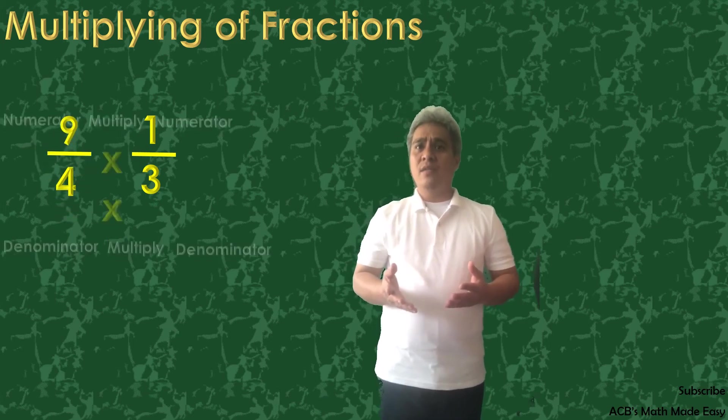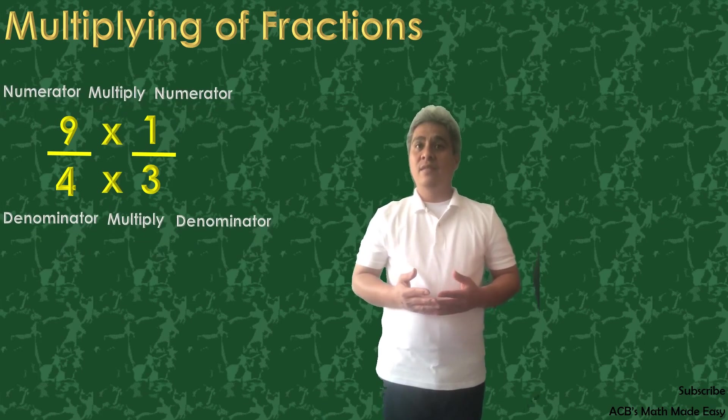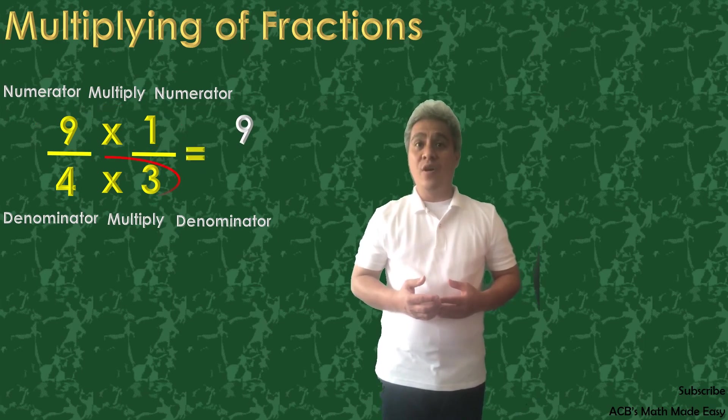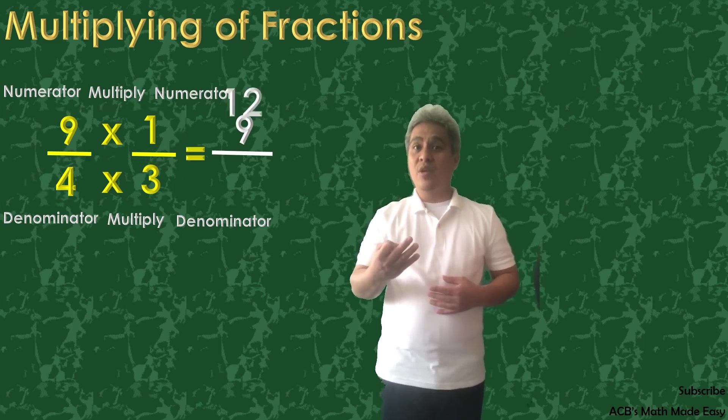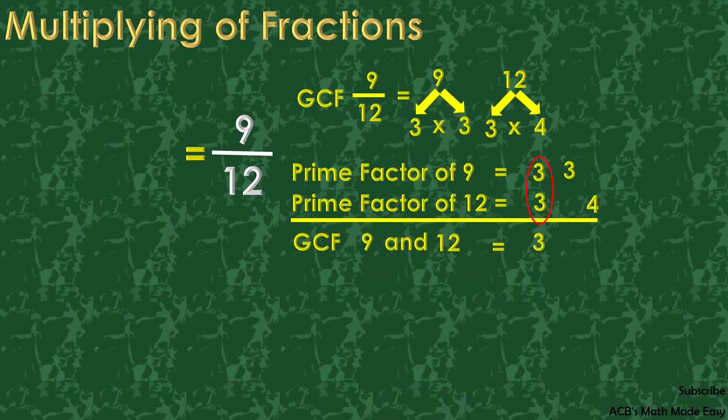We can now multiply the numerators and denominators. 9 times 1 equals 9, and 4 times 3 equals 12. 9 and 12 also have a common factor. That means we can simplify it to its lowest term.